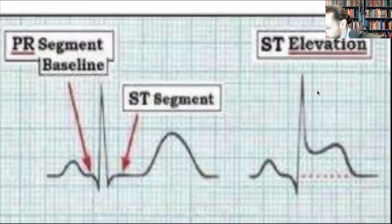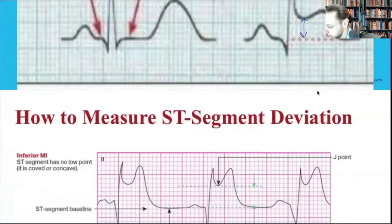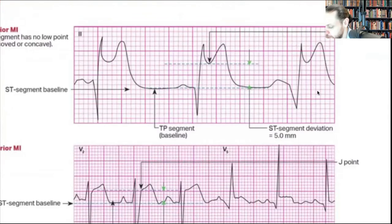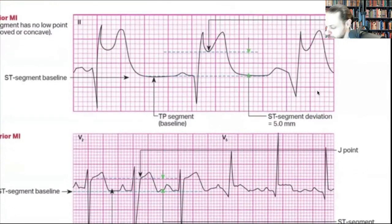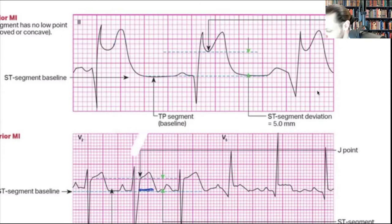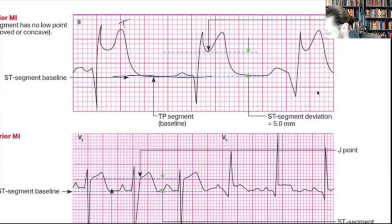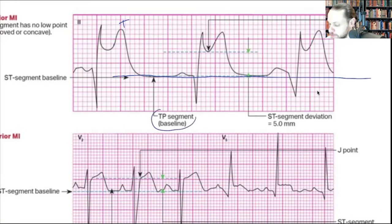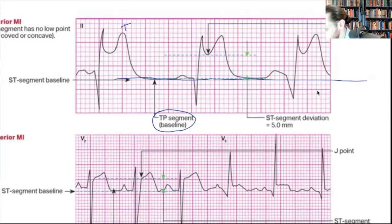This is the ST segment and this is what we measure. Very important: I'm not looking at the ST segment first. First I want to find the T wave and the P wave — because I want to find the TP segment. From T to P is my baseline. Once I draw that line I know the baseline of my EKG. You must find the TP segment first, or you'll mess it up.